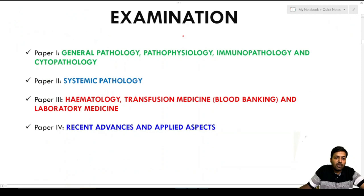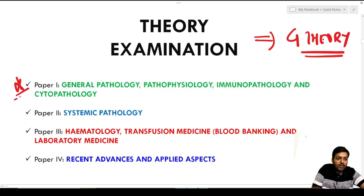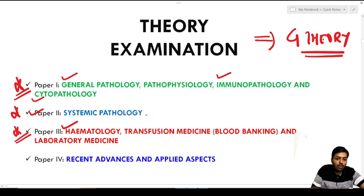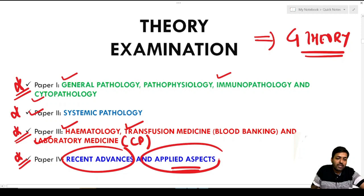For the theory examination, there are four papers. Paper one comprises general pathology, immunopathology, and cytopathology. Paper two is mainly systemic histopathology. Paper three covers hematology, blood banking or transfusion medicine, and laboratory medicine or clinical pathology. Paper four comprises recent advances and the latest updates in pathology, including WHO updates across different chapters. Journal club topics and important articles may also be included in paper four.